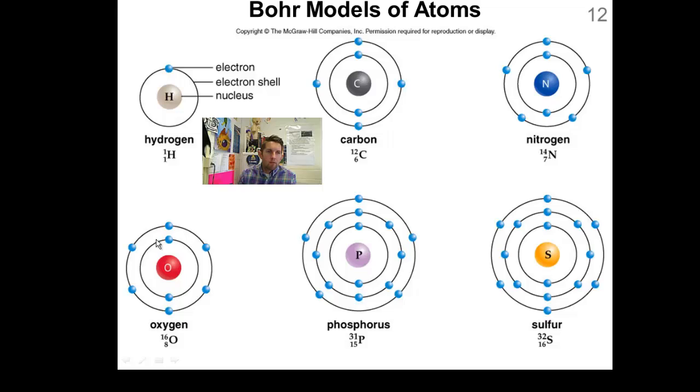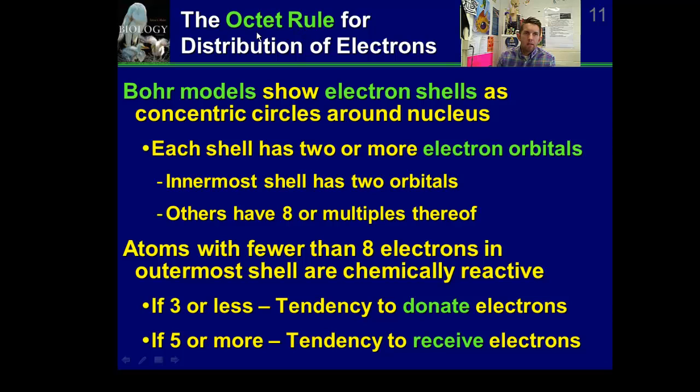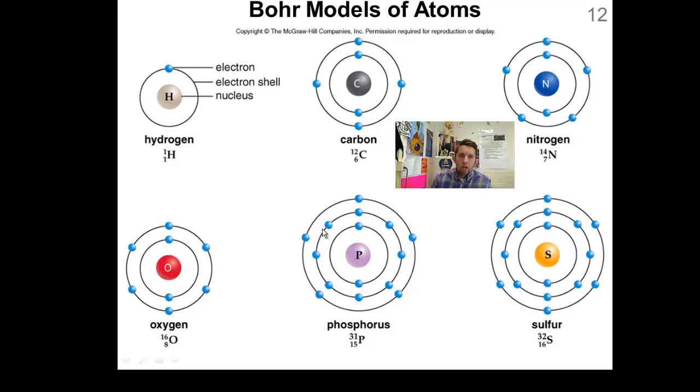So, you see a trend here. This innermost shell can hold a maximum of 2 electrons. And those shells outside of it can hold a maximum of 8. 2, 8, 8. If you fill the second shell, you add another one. And that's the octet rule. Octet obviously meaning 8. Bohr models show electron shells as concentric circles around the nucleus. The innermost can hold 2 and those outside can hold 8. If that valence shell or this outermost shell is full, that means that that atom is stable. It's happy. It doesn't want to bond with anything else. It doesn't want to gain electrons or lose electrons. It's stable.